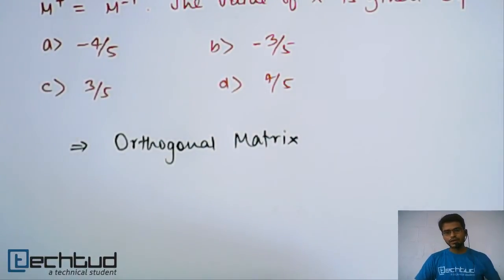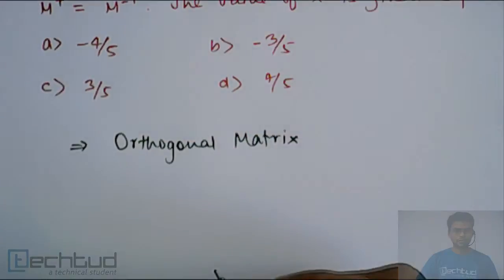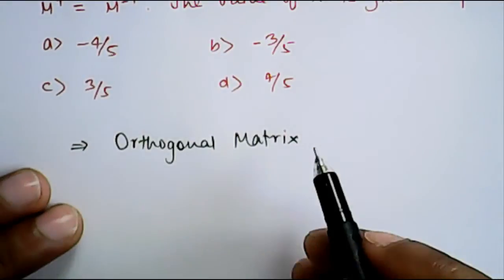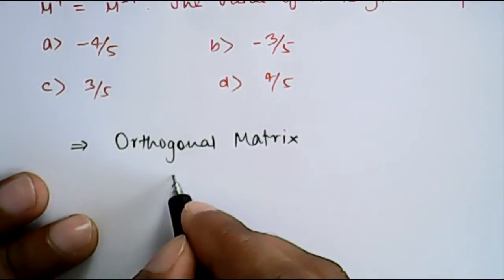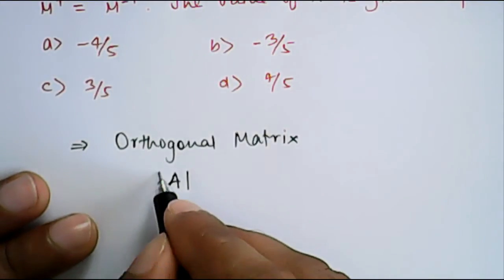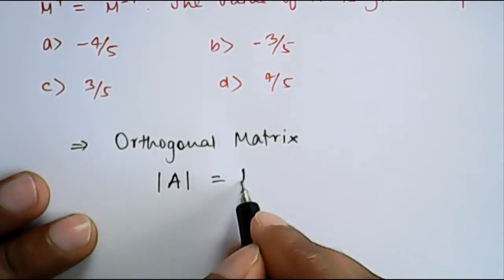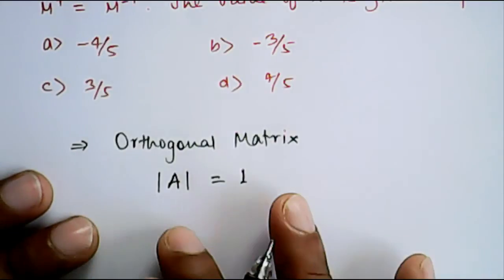So as we know that the orthogonal matrix is a matrix whose transpose is equal to inverse. So this is orthogonal matrix and we know that for orthogonal matrix the determinant is equal to 1.